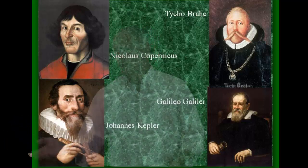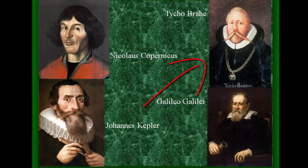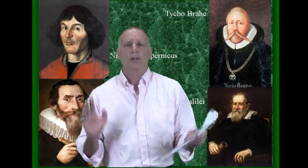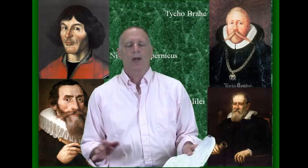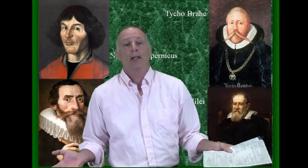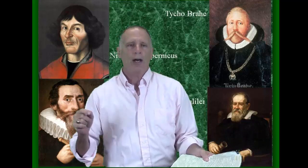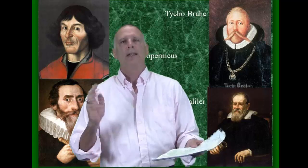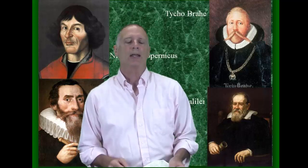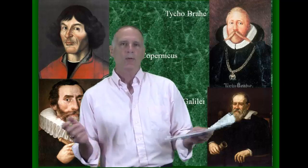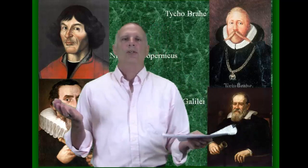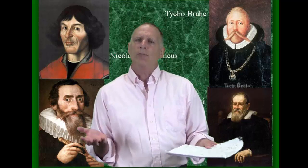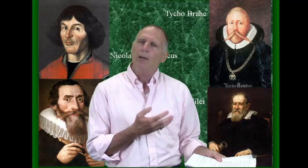And this fellow here, Tycho Brahe, he had a cutting edge for the time, the most cutting edge astronomical observatory probably in the world. And all it really was at that time was his backyard. He would go out every night, he didn't have a telescope, but he would look up at the stars on clear nights in cold or heat of the summer, no matter what. He was out there taking data on the sky and he did that for over 30 years. The word got around about how good his data collection was. The only problem was that Brahe wasn't very good with mathematics.